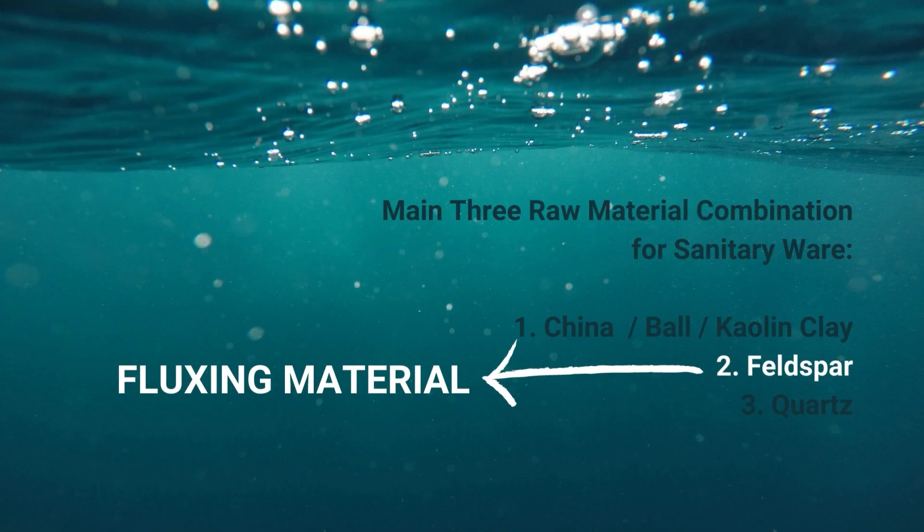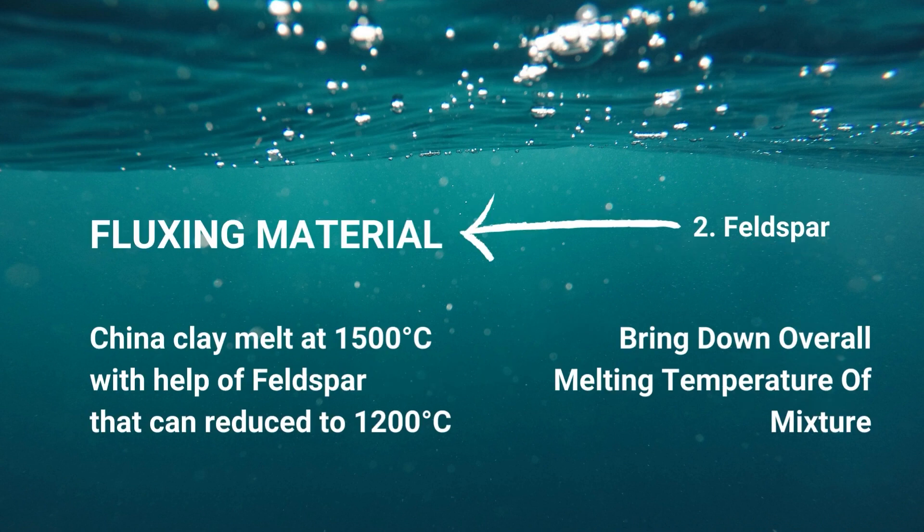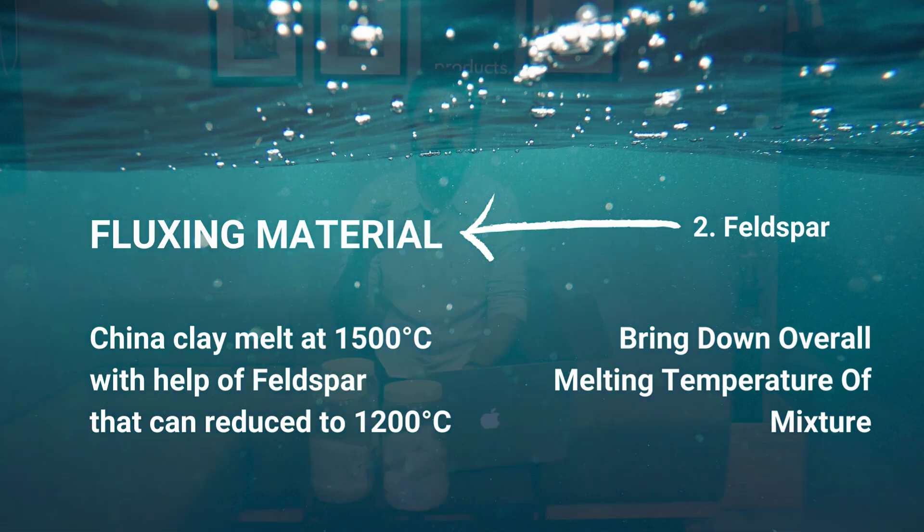Feldspar is a fluxing agent. The purpose of using feldspar is that regular china clay, kaolin clay, or ball clay have a melting temperature of 1500 degrees Celsius or even more. However, when you mix those raw materials together with feldspar, the feldspar brings that temperature down to 1200, 1250, or even in some applications 1100 or 1050 degrees Celsius. So feldspar is very important in the production of sanitary ware.